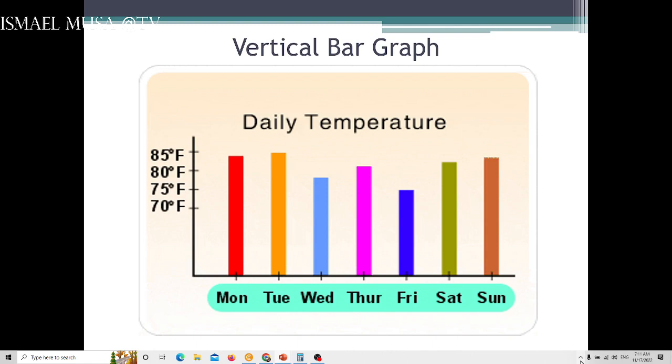Then you can use vertical graph. You notice the bars are in vertical form. Daily temperature - Monday, Tuesday, Wednesday, Thursday, Friday, Saturday, Sunday. So you can have the x-axis and the y-axis, the measurement. When you make a vertical graph, your categories are on the x-axis while on the y-axis are your frequencies or the measure.